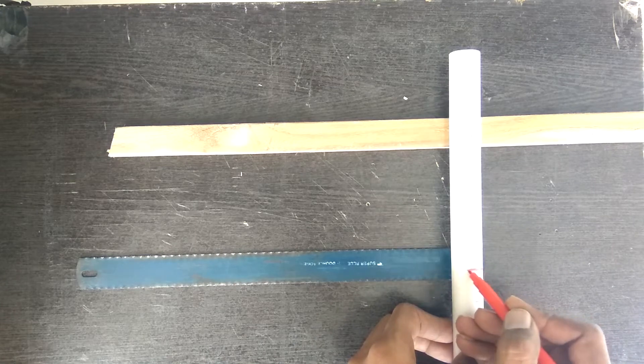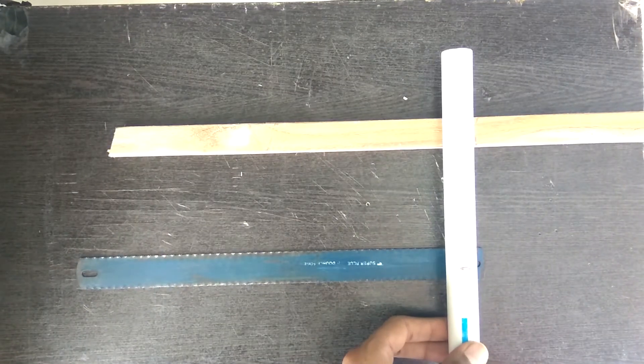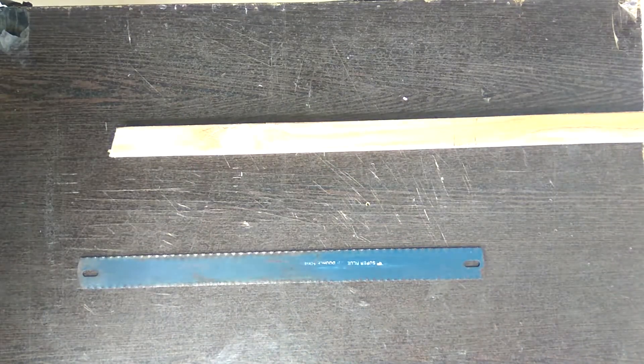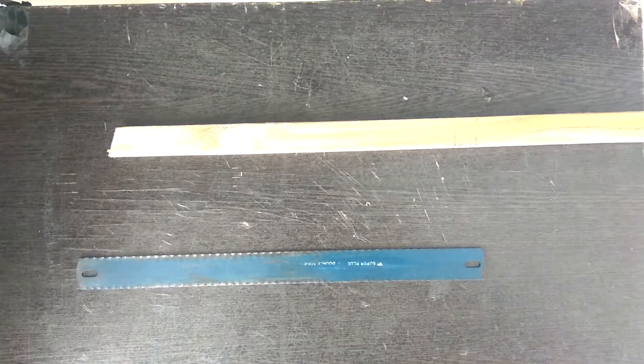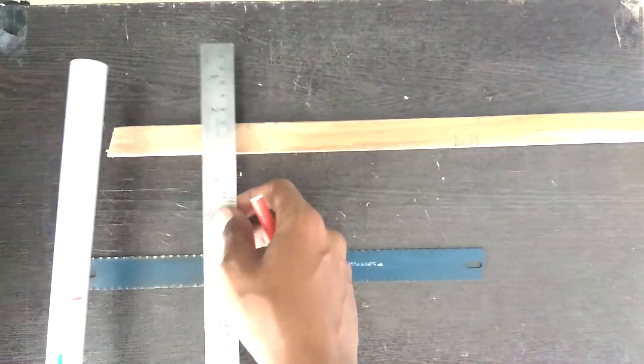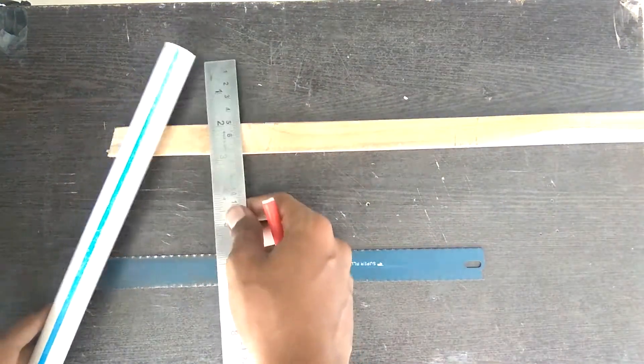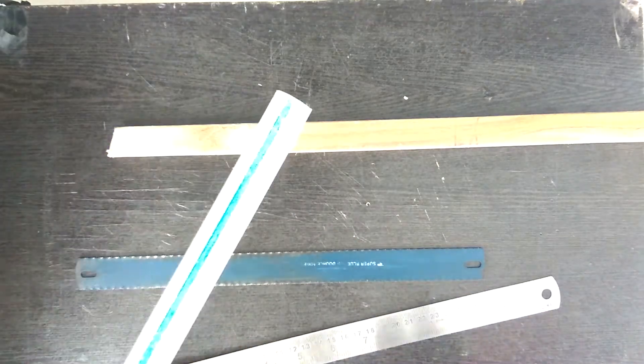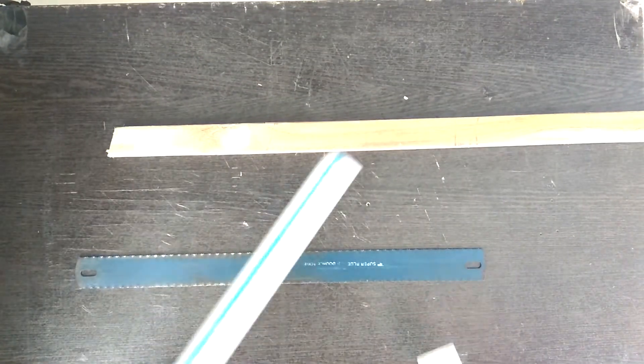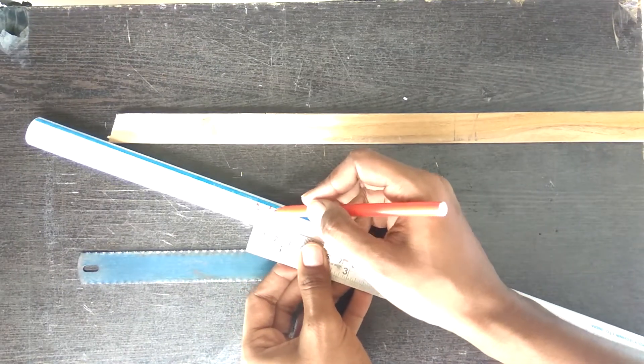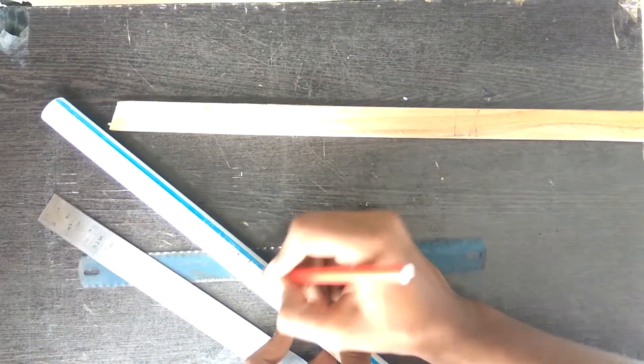Next I'll take the PVC pipe and mark it for both these sides, the back and the front. Then if you see the wooden frame properly, it has a slight angle and that I made purposefully before this video.